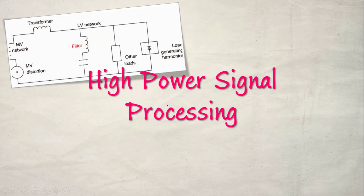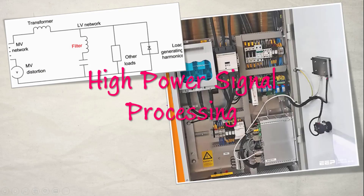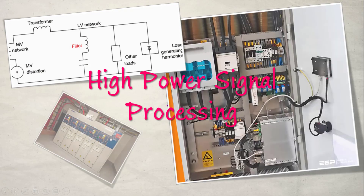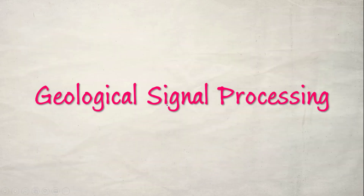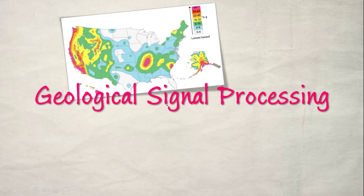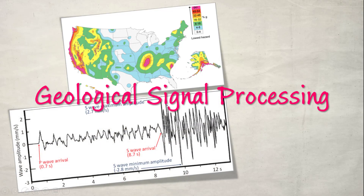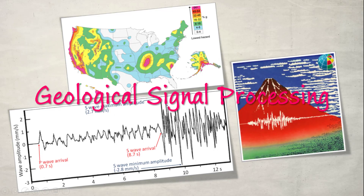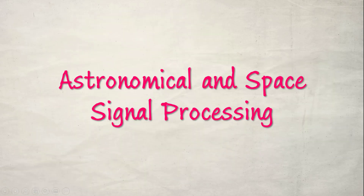In power systems and power generation, signal processing techniques are used to improve the quality of power transmission. There are also applications in geological signal processing — identifying the locations of oil fields, determining where different crops can be grown, and assessing soil quality at different locations using satellite image processing. Seismographs use signal processing to measure the nature of earthquakes, predict tsunamis, and even predict volcanic eruptions.